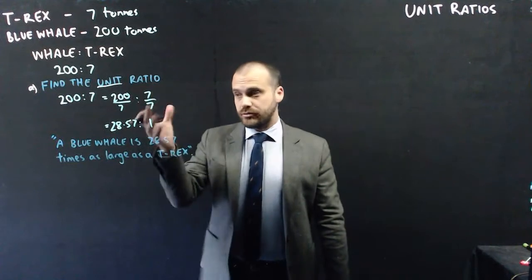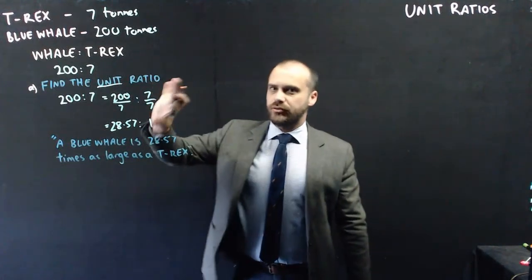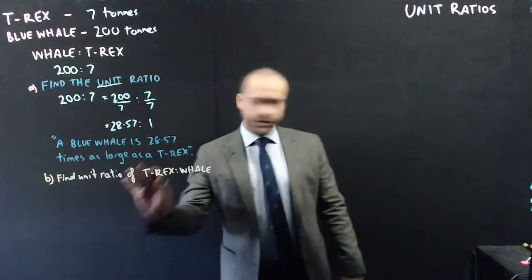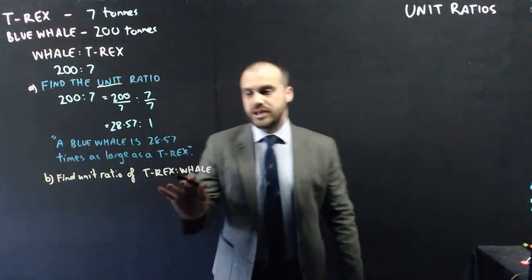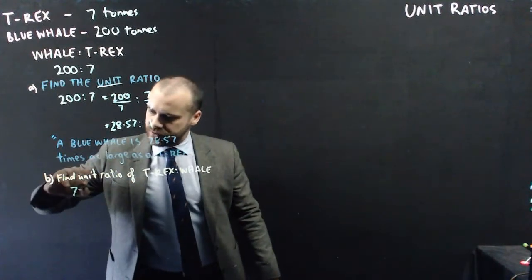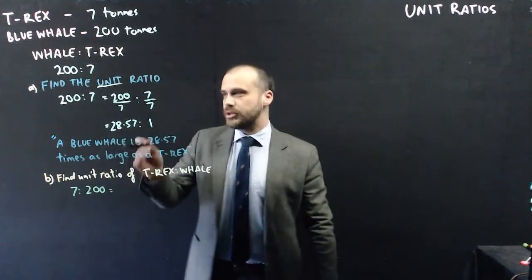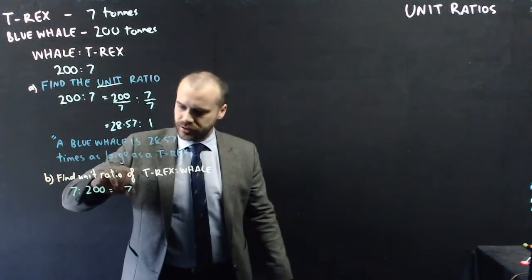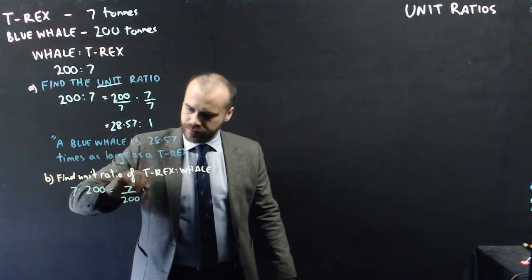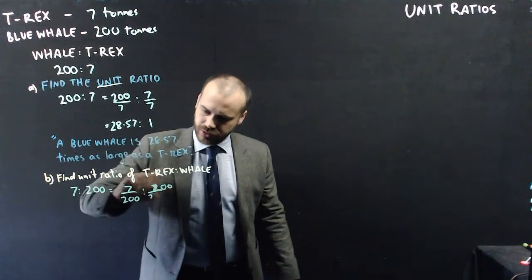Now, this is a unit ratio. Something is to 1. And we could have written this unit ratio in reverse if we wanted to. This time I'm going to find the unit ratio of T-Rex to whale. So T-Rex is 7 and whale is 200. Now, this time I'm going to divide both sides by 200. 200 over 200.